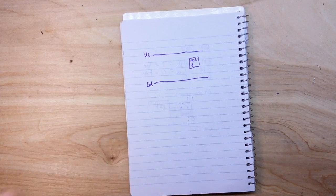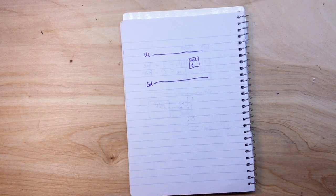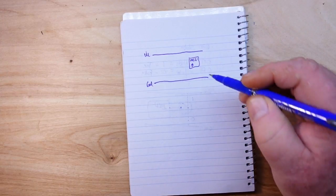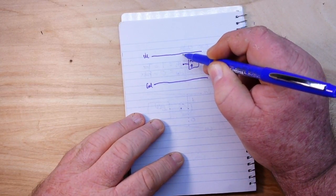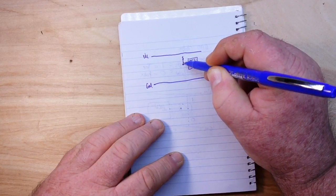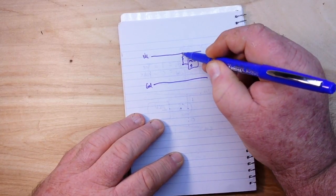Now if we want to do a pull-up resistor, basically what we're going to do is we are going to pull that input high.